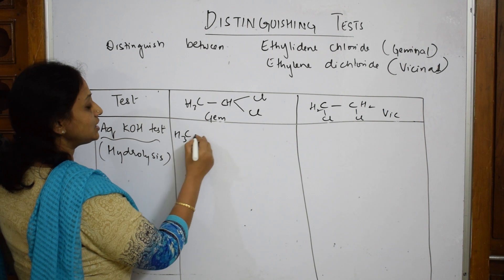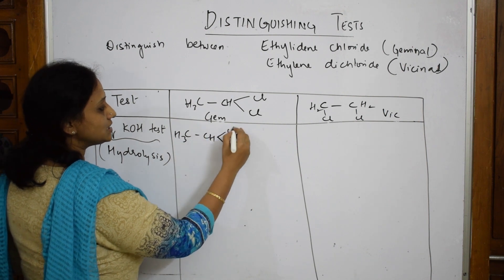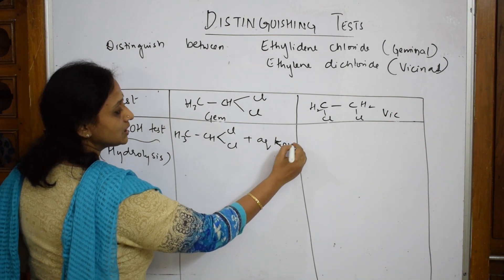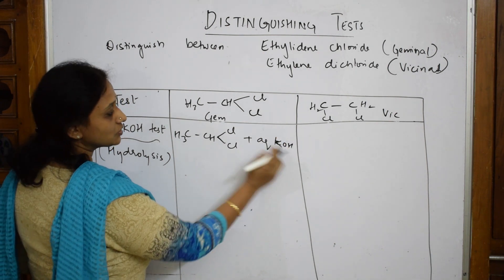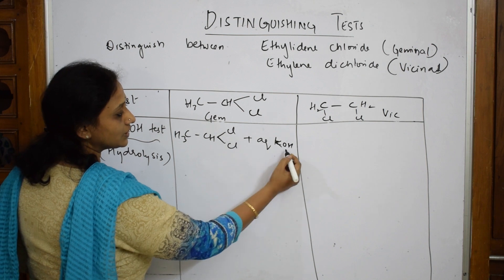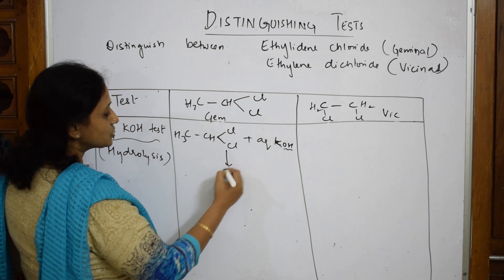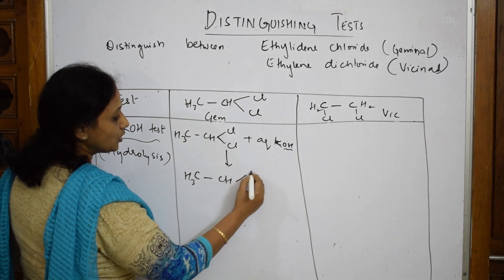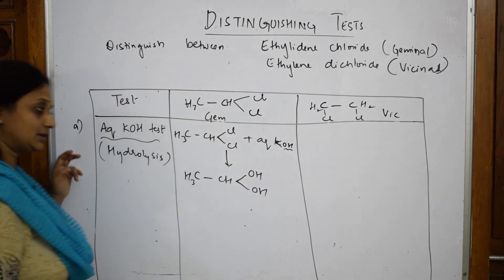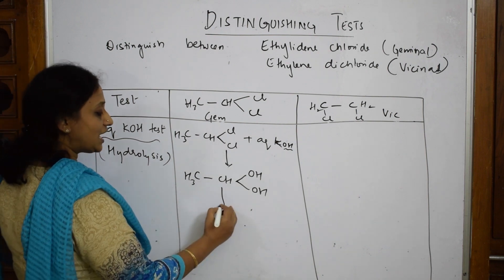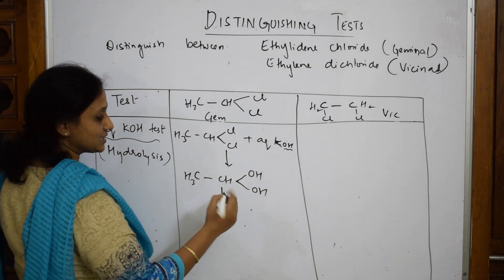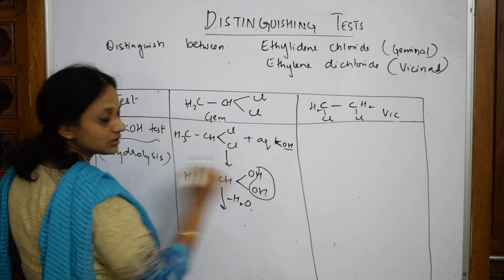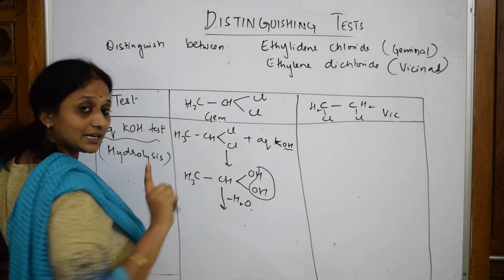For the first test, I take CH₃CHCl₂ — the geminal halide — and add aqueous KOH. Taking two moles of KOH, this acts as the nucleophile. What we get is CH₃CH(OH)₂. Then by hydrolysis, we lose a water molecule — H from one OH and OH from the other — and I get an aldehyde (CH₃CHO).